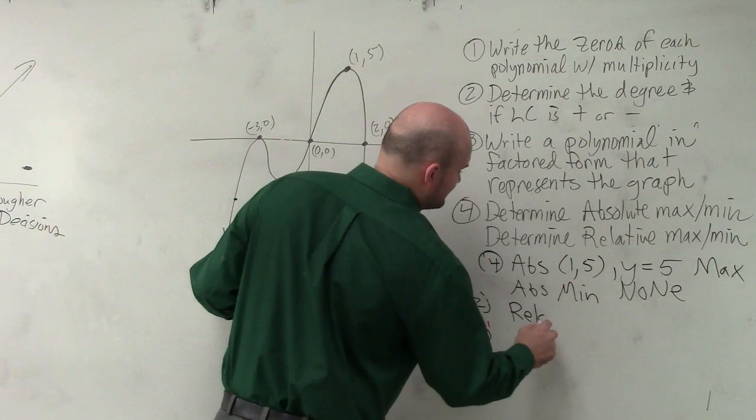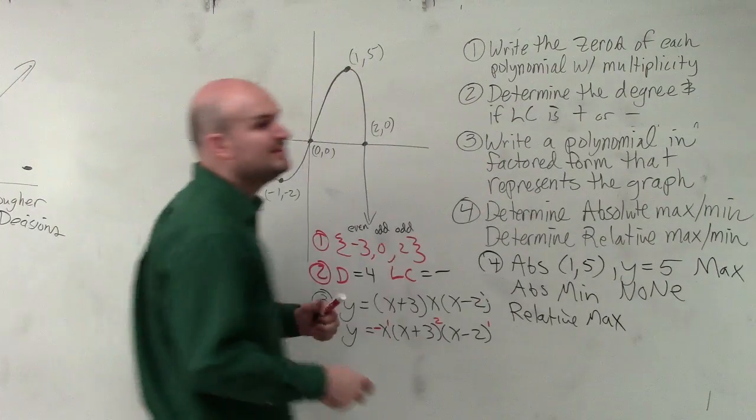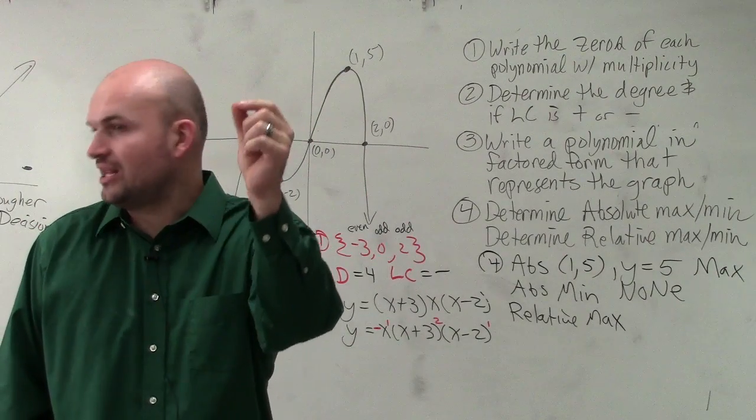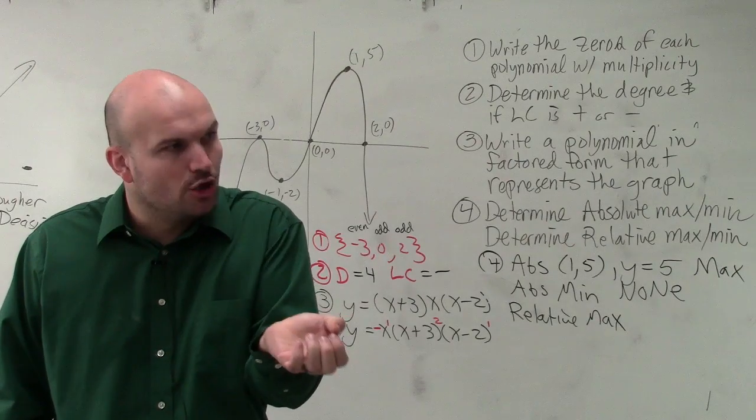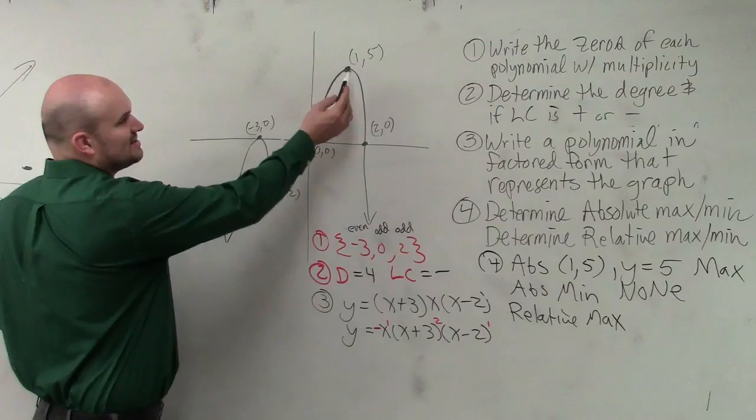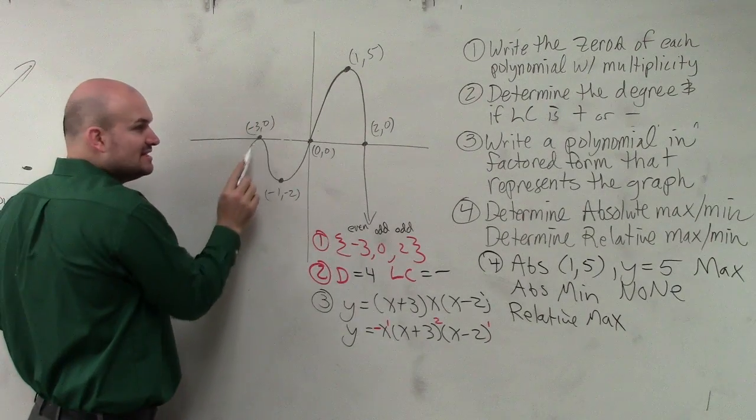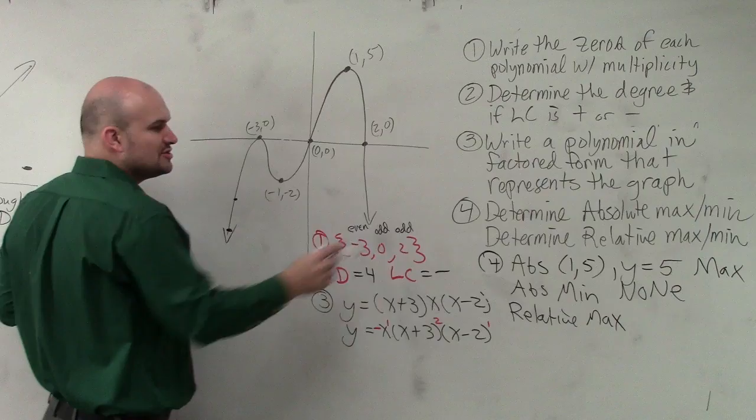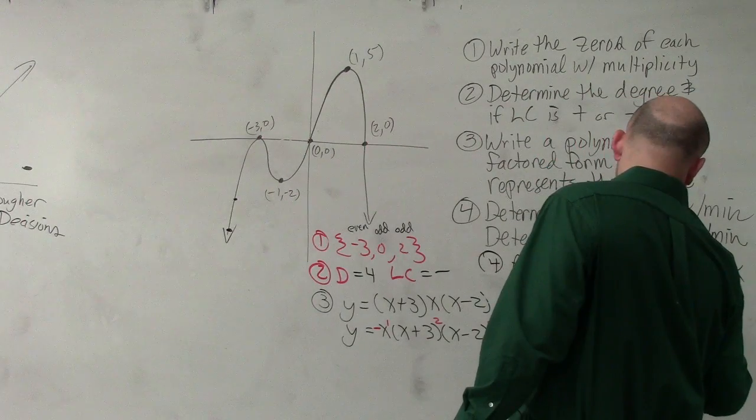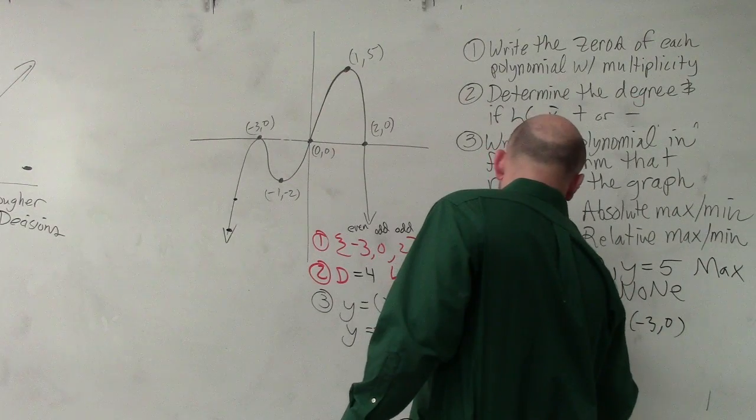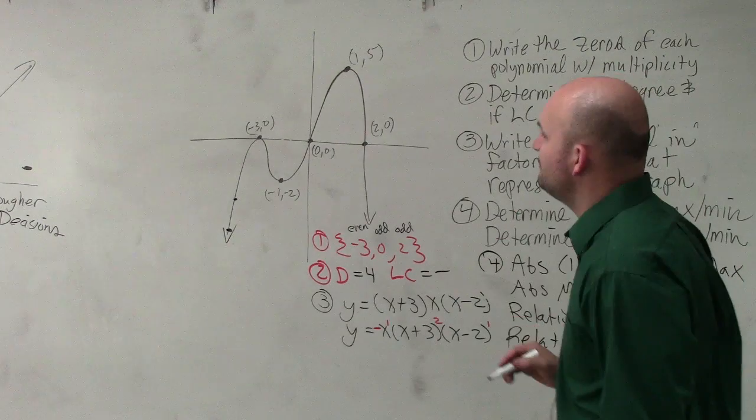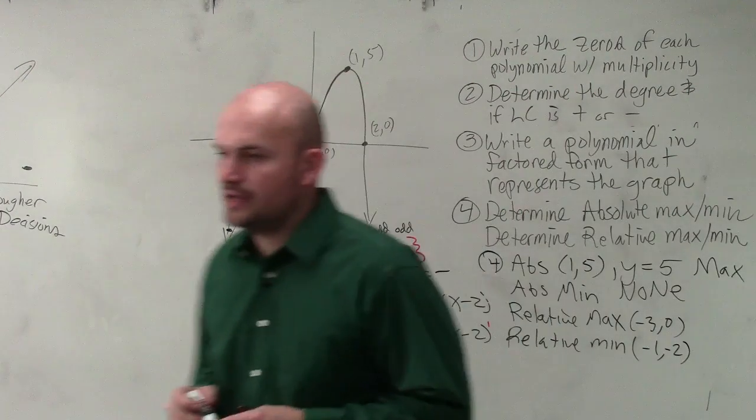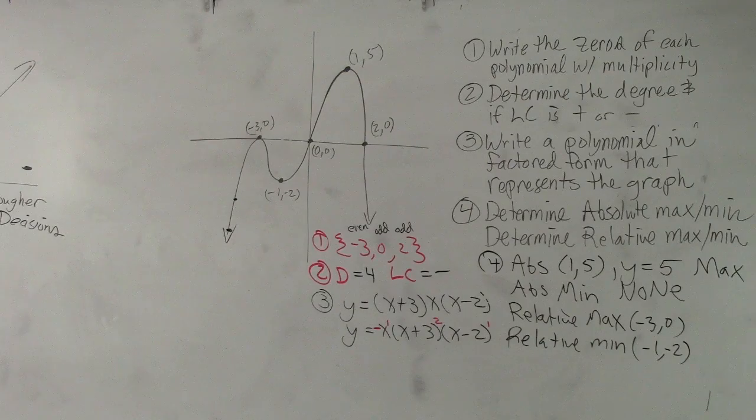Then we talk about relative. The relative max is going to be basically wherever there's a turning point. If that's a high point, we call that a relative max. Wherever there's a turning point and that's a low point, we call that a relative min. This is the maximum point, but you can see this is another kind of little maximum in that little area. You see how that's like a little maximum? So we call that a relative max, which is negative 3, 0. And then relative min would be negative 1, negative 2.